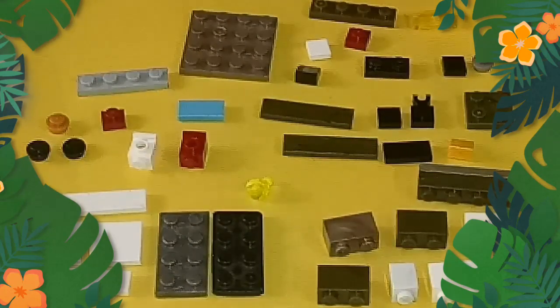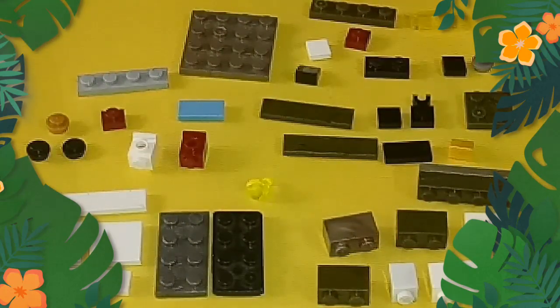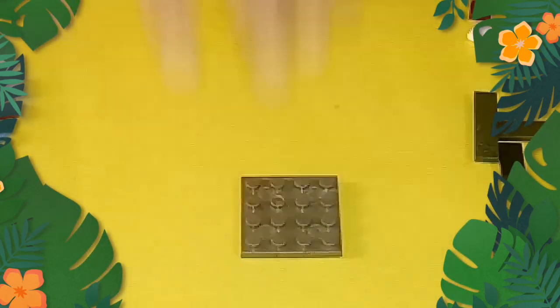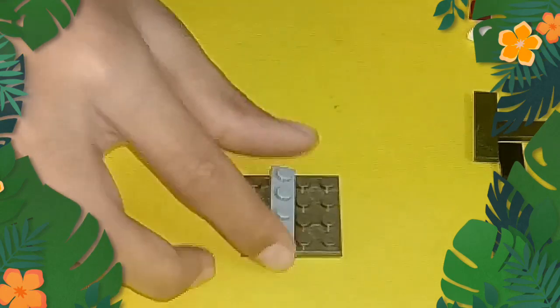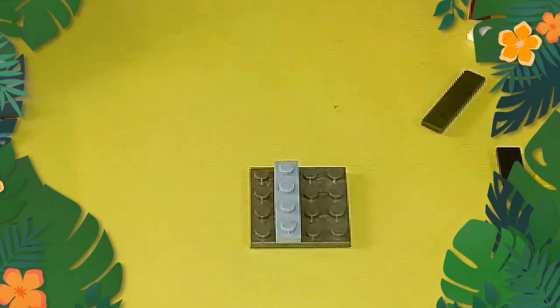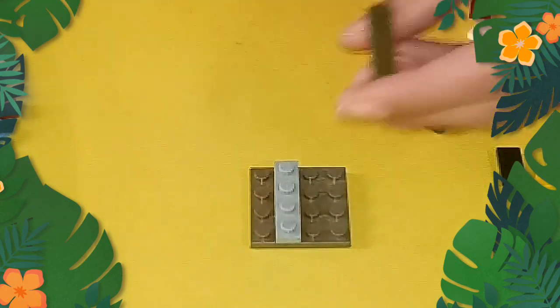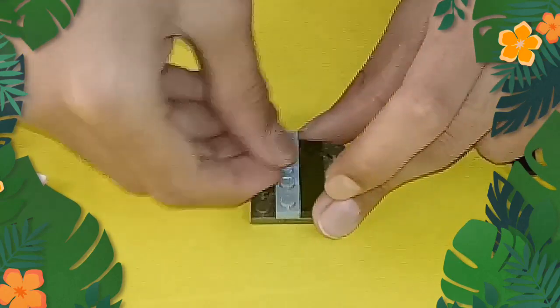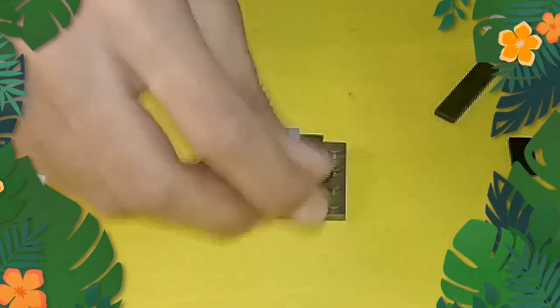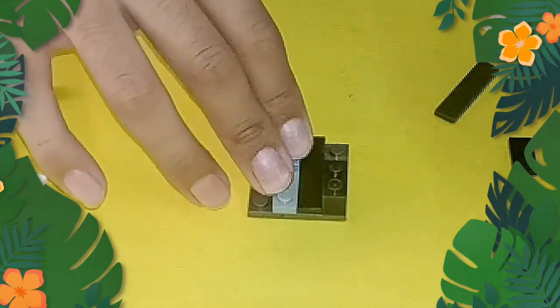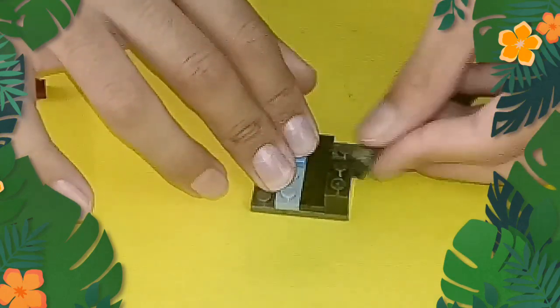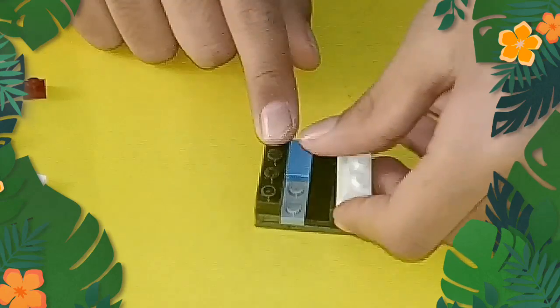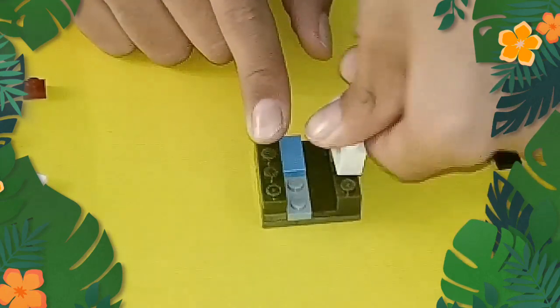Guys, these are the blocks that you will need. Now let's start making. First we will take the 4x4 base, then we will take a 1x4 plate, put it like this. Then what I will use is I will put a tile over here and tile over here, and then the wall like this. It's pretty easy to make, so simple.